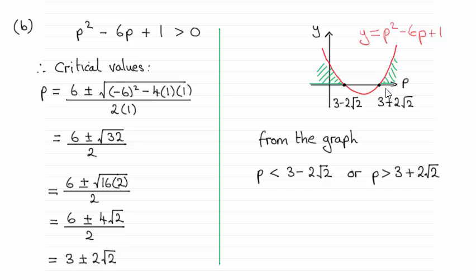And what we're looking for is where this expression here, y we've called it now, p squared minus 6p plus 1, where it's greater than 0. So that's above the p-axis, and you can see those y values are values that are less than 3 minus 2 root 2 and greater than 3 plus 2 root 2.